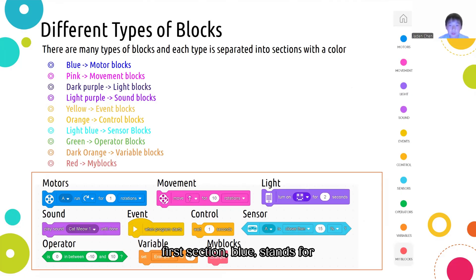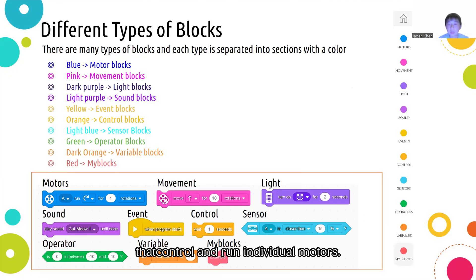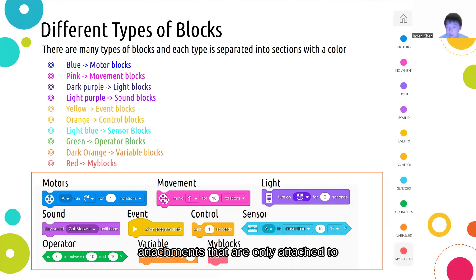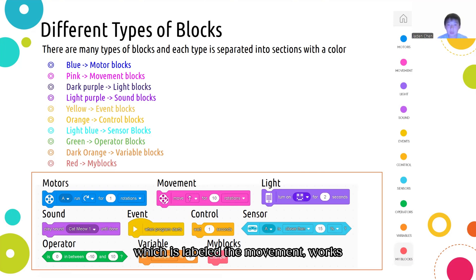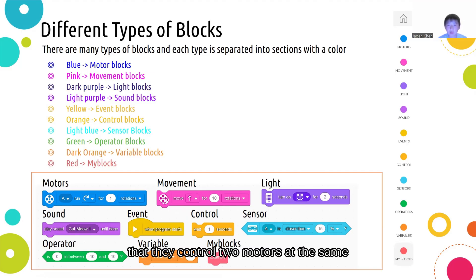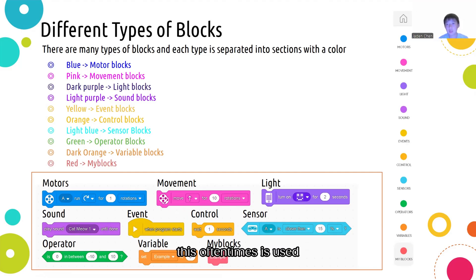So the first section, blue, stands for motors, and it contains all the blocks that control and run individual motors. This can be used to program attachments that are only attached to single motors. The pink section, labeled movement, works similarly to the motor blocks, except that they control two motors at the same time, which you have to configure. This is oftentimes used to drive the robot.